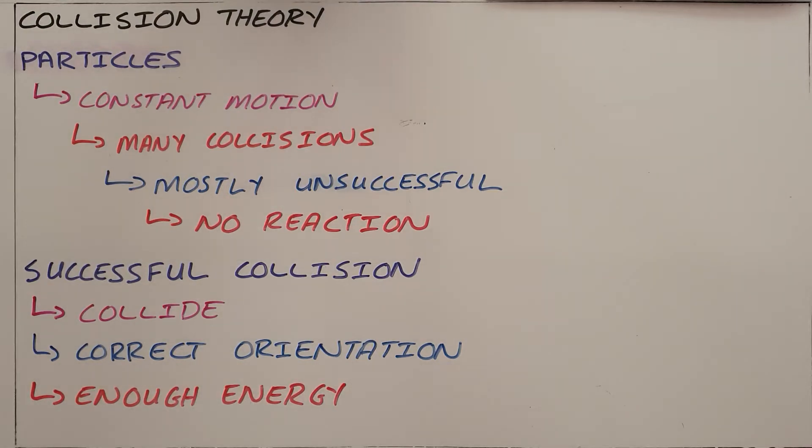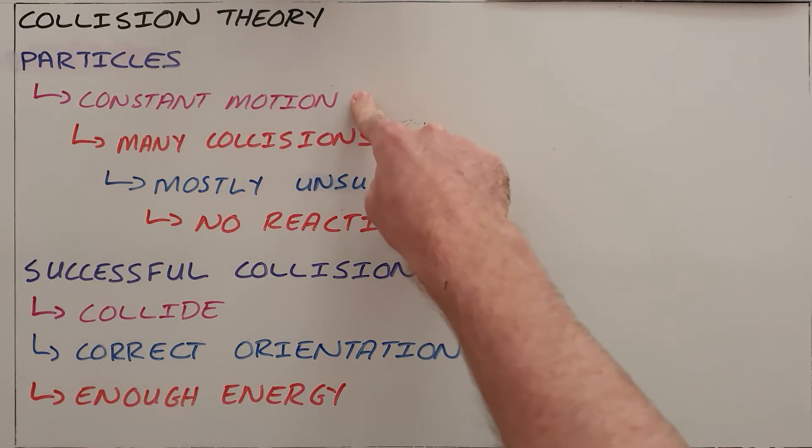In order to understand the section on rates of reactions, it is first necessary to understand collision theory. Collision theory explains to us how reactions happen. It is based on the principles that we learned in grade 9, where we said that all matter is made up of particles. Those particles are in constant motion.